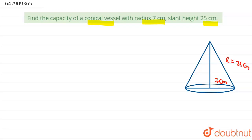This is the formula of the conical vessel. The formula is one-third pi R squared h.